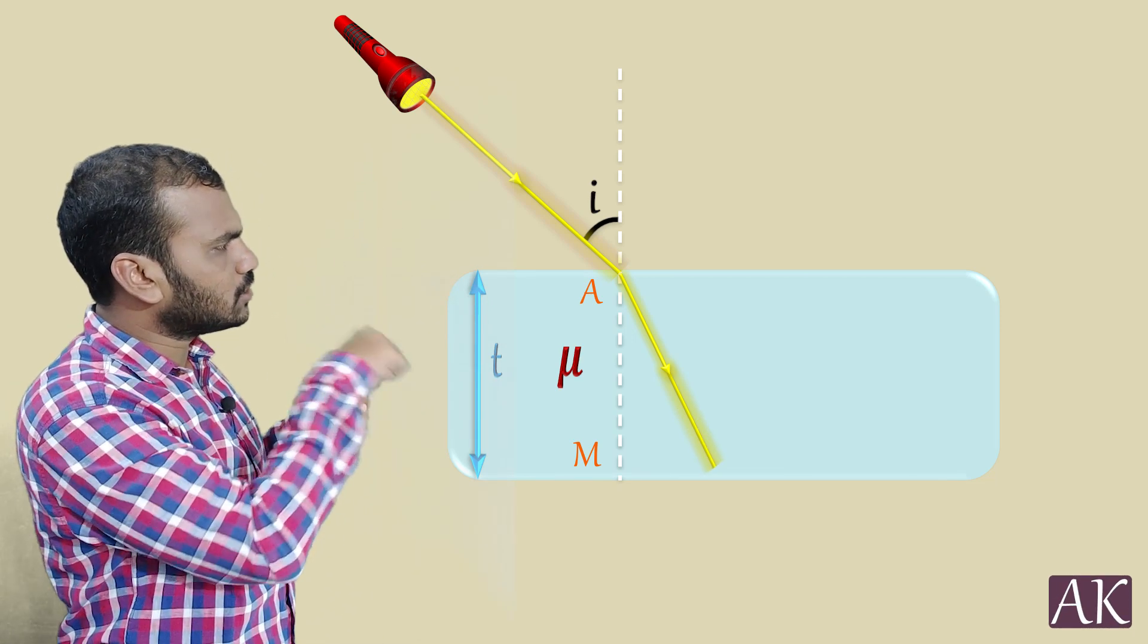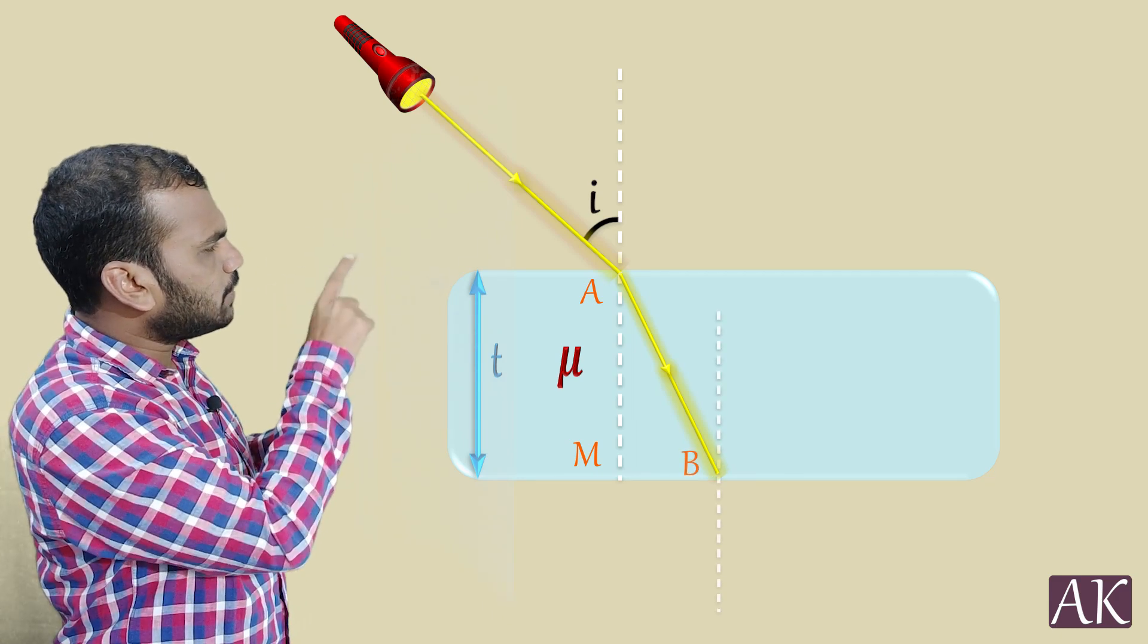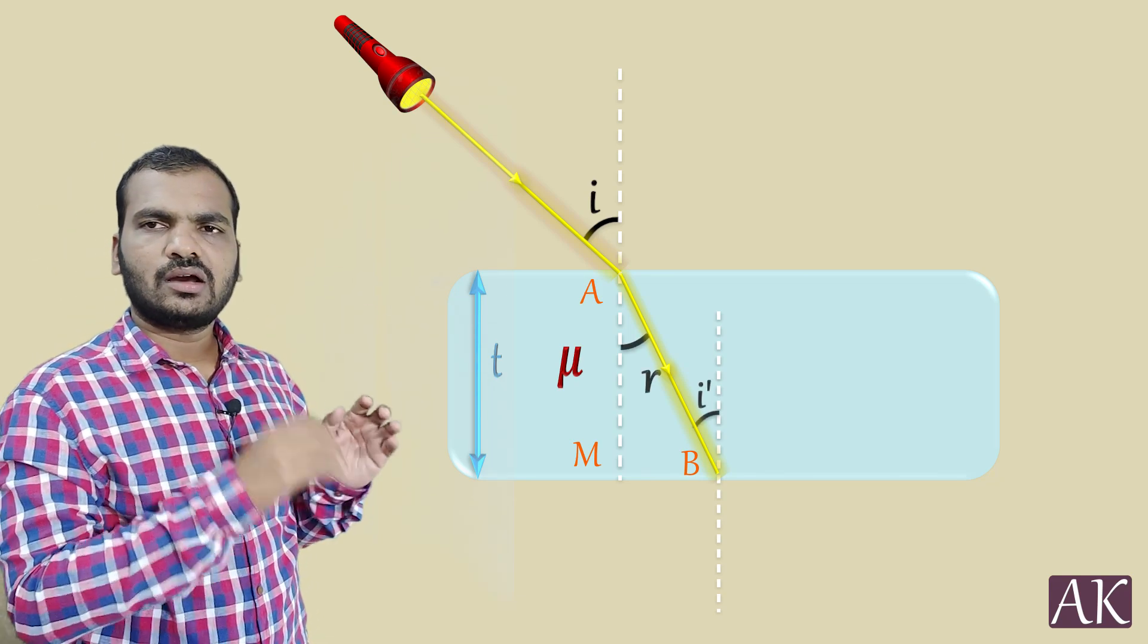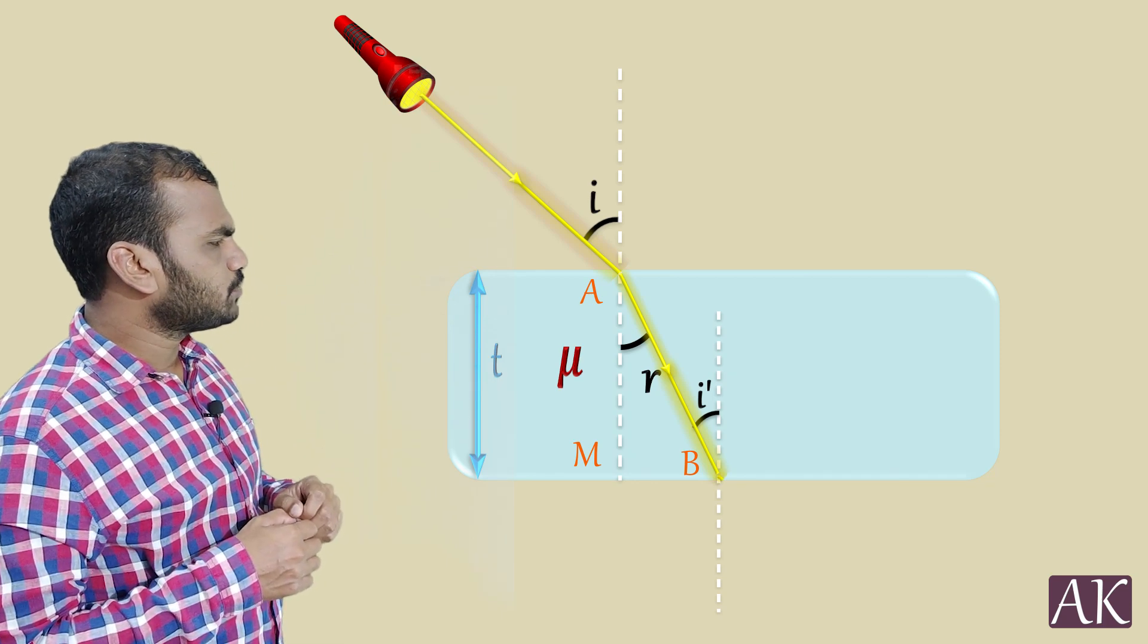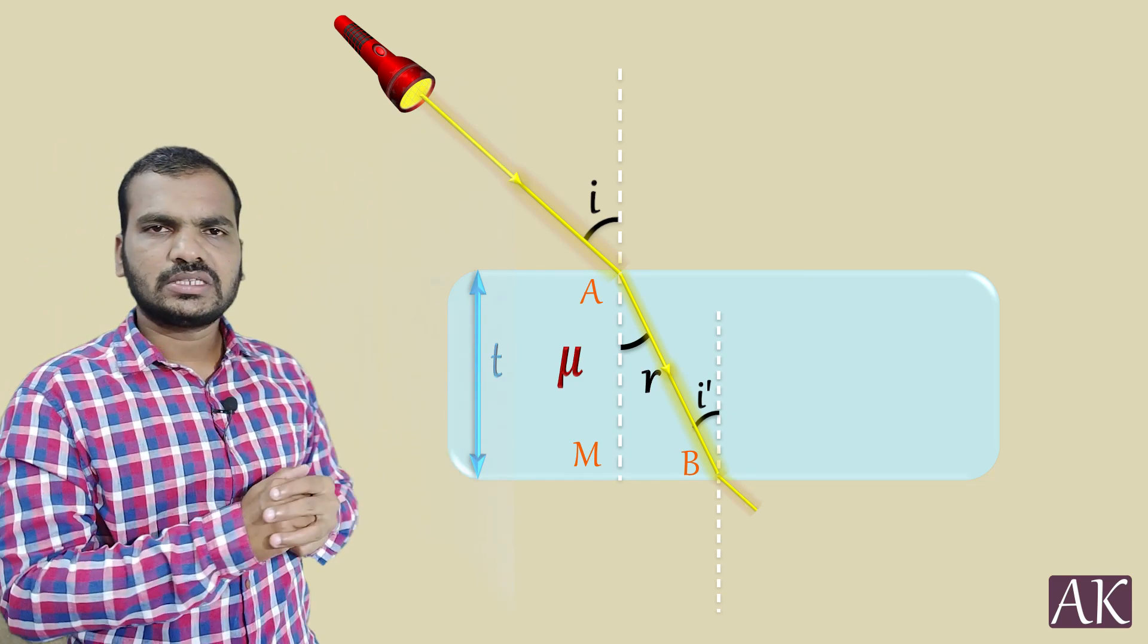At B again you take a normal. Now it is making refracting angle R at the first point A, same angle is going to become angle of incidence at B. Now when it comes out, it comes out with an emerging angle E and you can see clearly that first ray and final ray are parallel to each other.